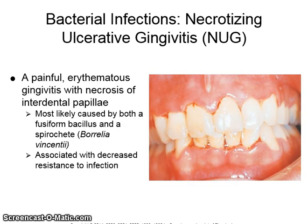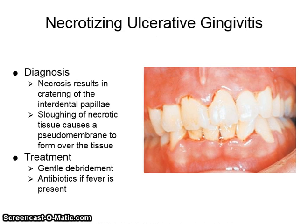Necrotizing ulcerative gingivitis, or NUG, is a painful erythematous gingivitis with necrosis of the interdental papillae. It is most likely caused by both a fusiform bacillus and a spirochete known as Borrelia vincenti. It is associated with decreased resistance to infection. Necrosis results in cratering of the interdental papillae. Sloughing of necrotic tissue causes a pseudomembrane to form over the tissue. Treatment involves gentle debridement and antibiotics if fever is present.